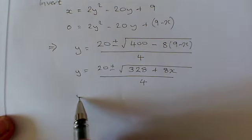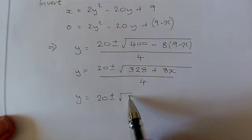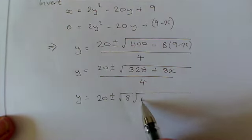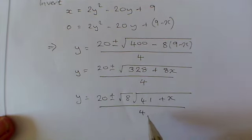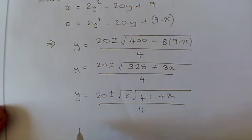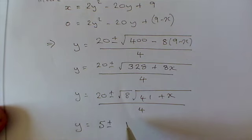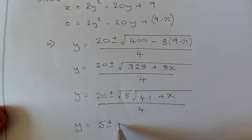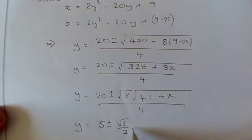And of course √8 as my calculator would tell me is equal to 2√2. If that's the case, I could divide through by 4. 20 by 4 is 5, and 2√2 by 4 is √2/2, times by √(41 + x).